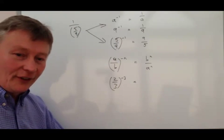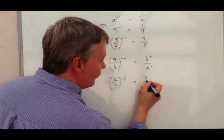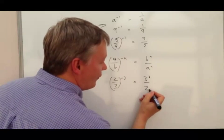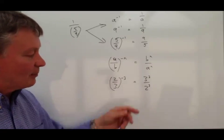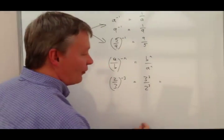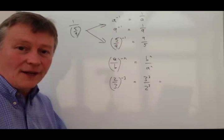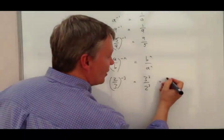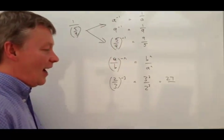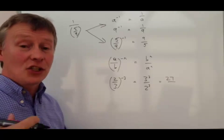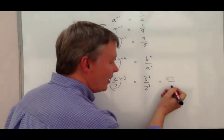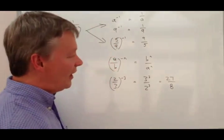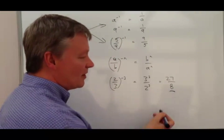Well, if we flip it around the other way, that's going to give us 3 to the power of 3 over 2 to the power of 3. Well, 3 to the power of 3 is 3 times 3 times 3, which is 27. And 2 to the power of 3 is 2 times 2 times 2, which is 8. And that would be the answer to this particular question.